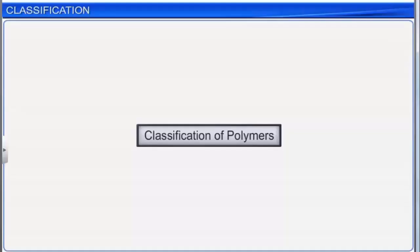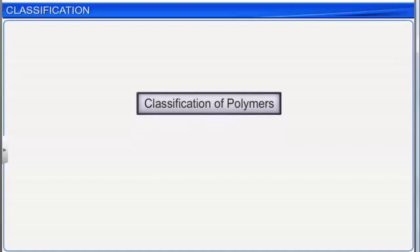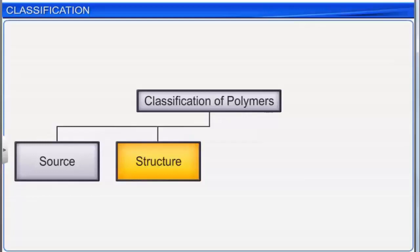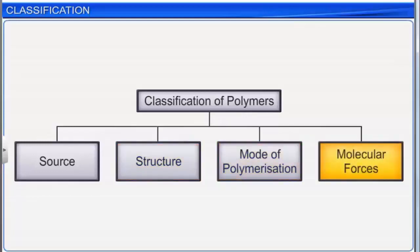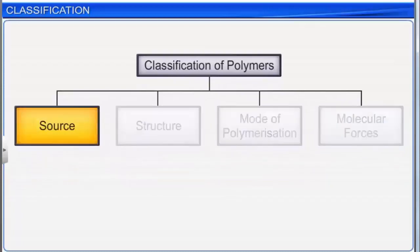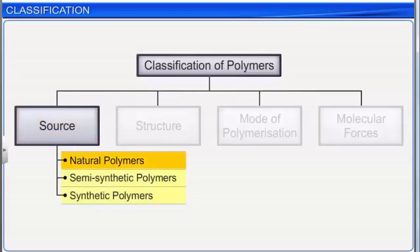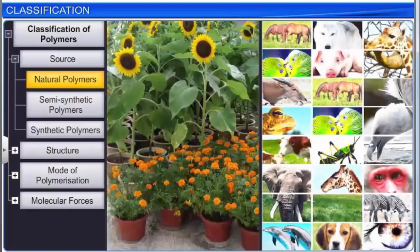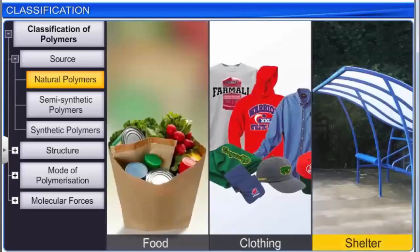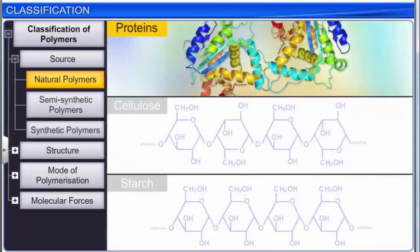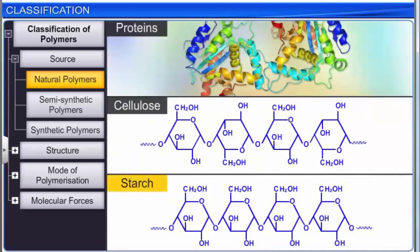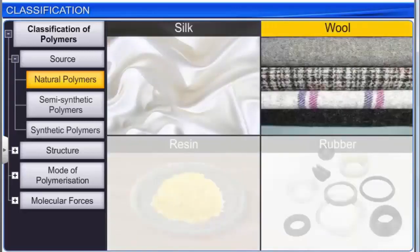Polymers can be classified in a variety of ways: on the basis of their source, structure, mode of polymerization, and molecular forces. Depending upon the source from which they are obtained, polymers are categorized into three types. Natural polymers are found in plants and animals and provide much of our food, clothing, and shelter. Examples are proteins, cellulose, starch, silk, wool, resin, and rubber.